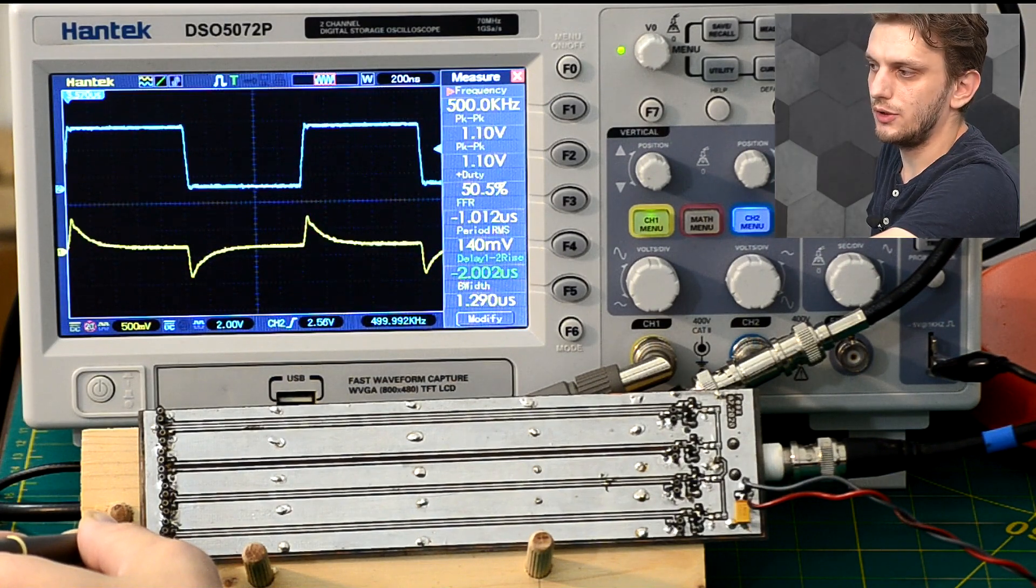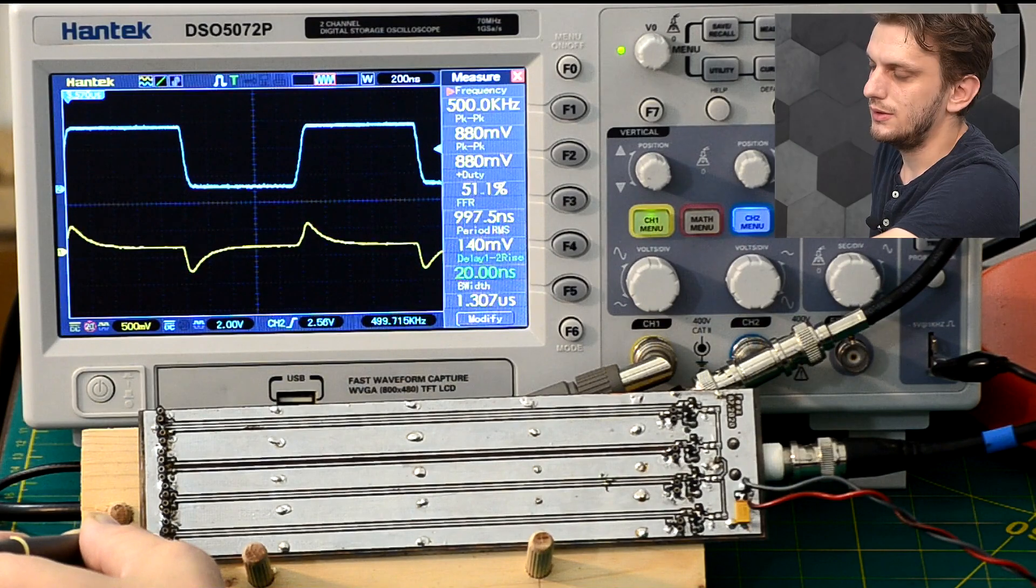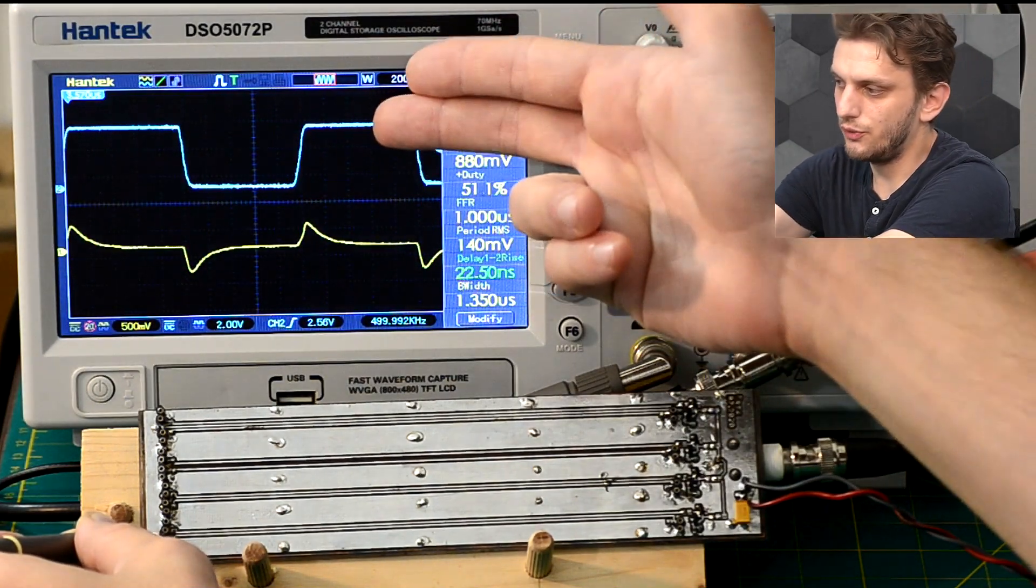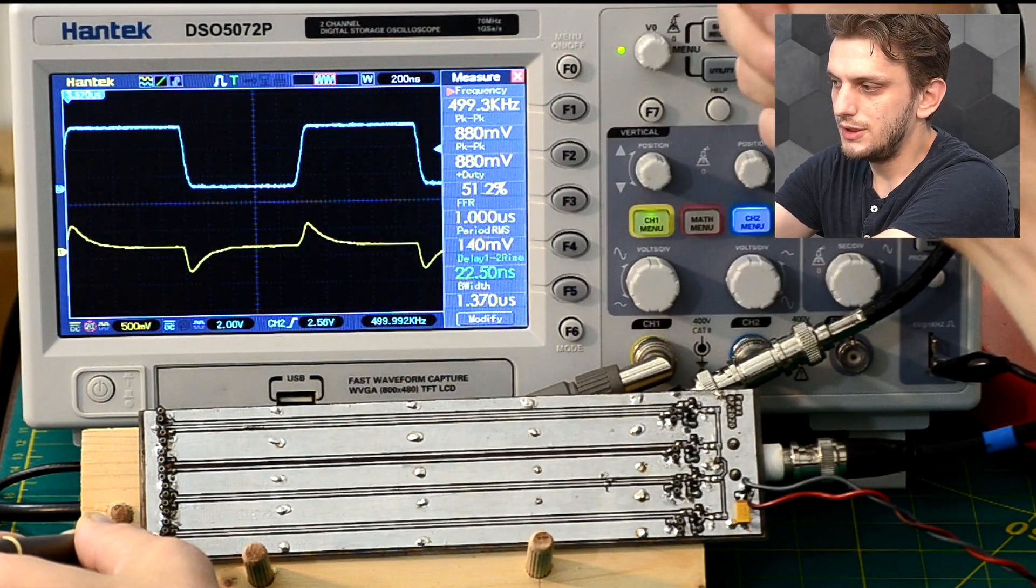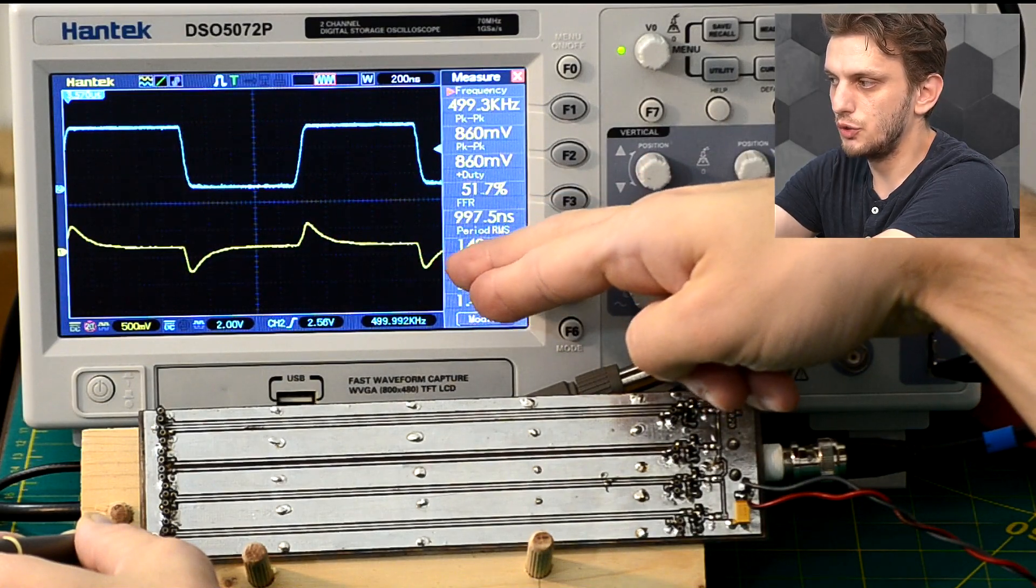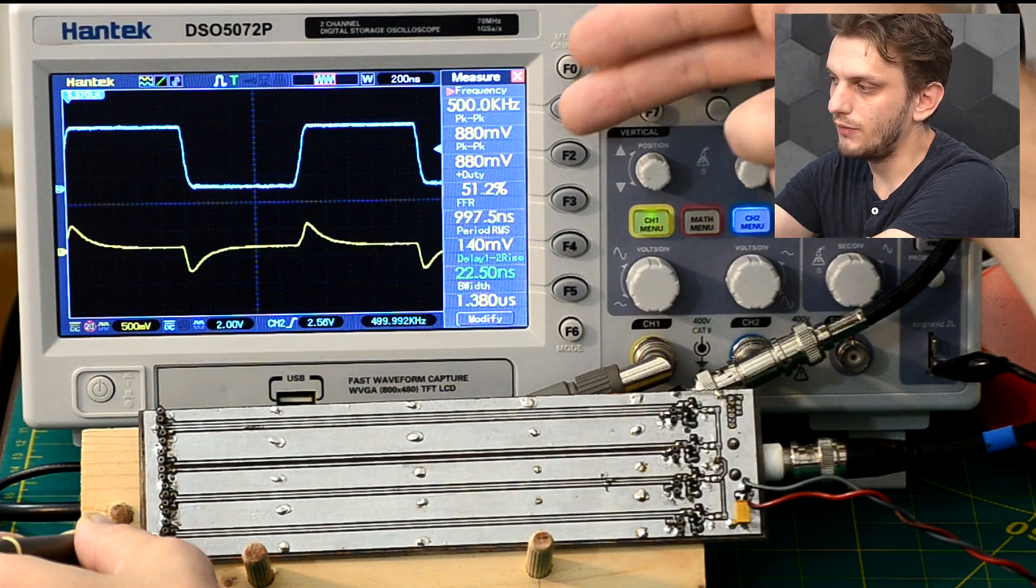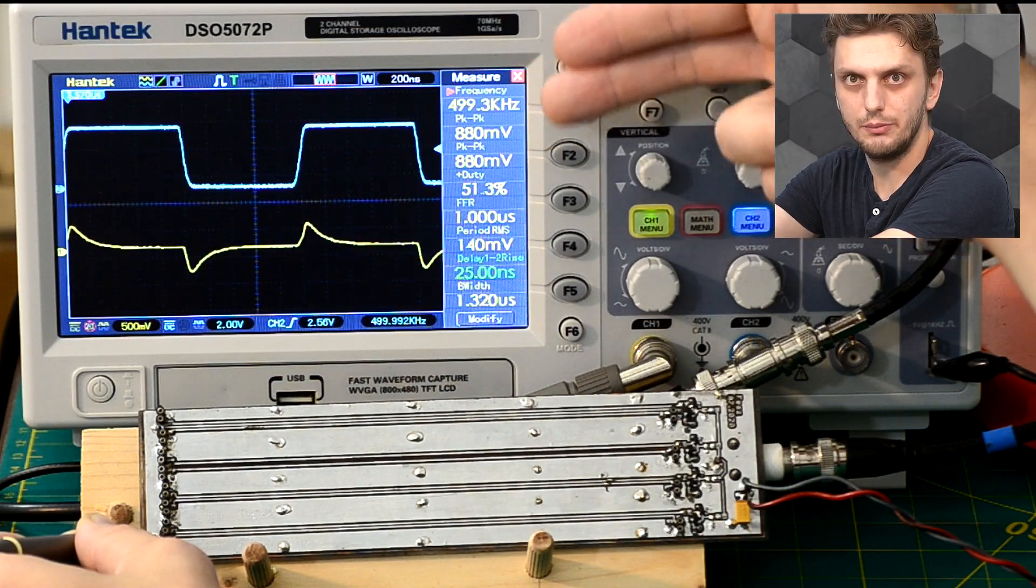So if I were to act on the slope of my first signal, say increase its rise and fall time, we can already see that our induced signal is much smaller. So we went from a one point something volt signal to an 880 millivolt peak to peak signal.